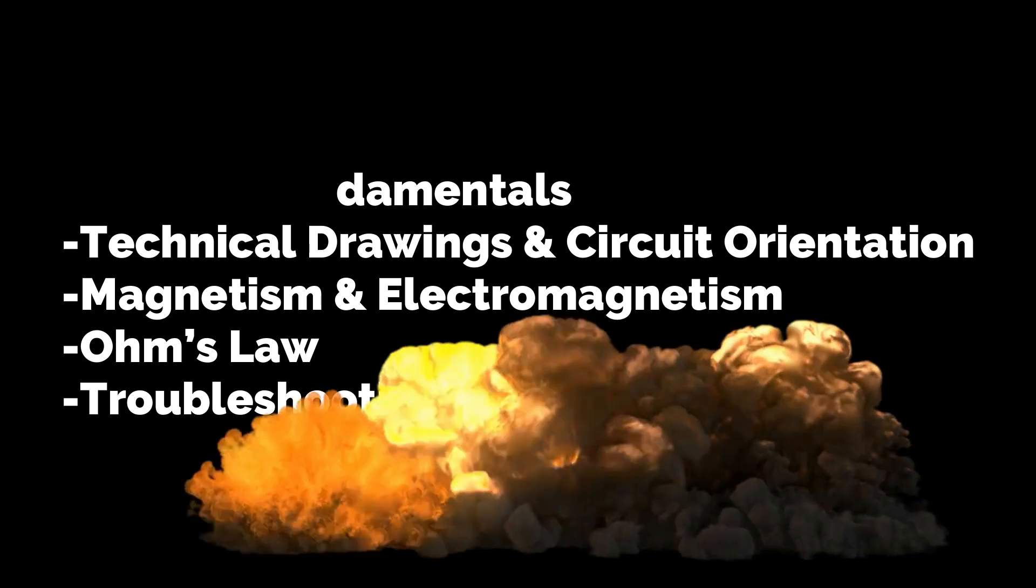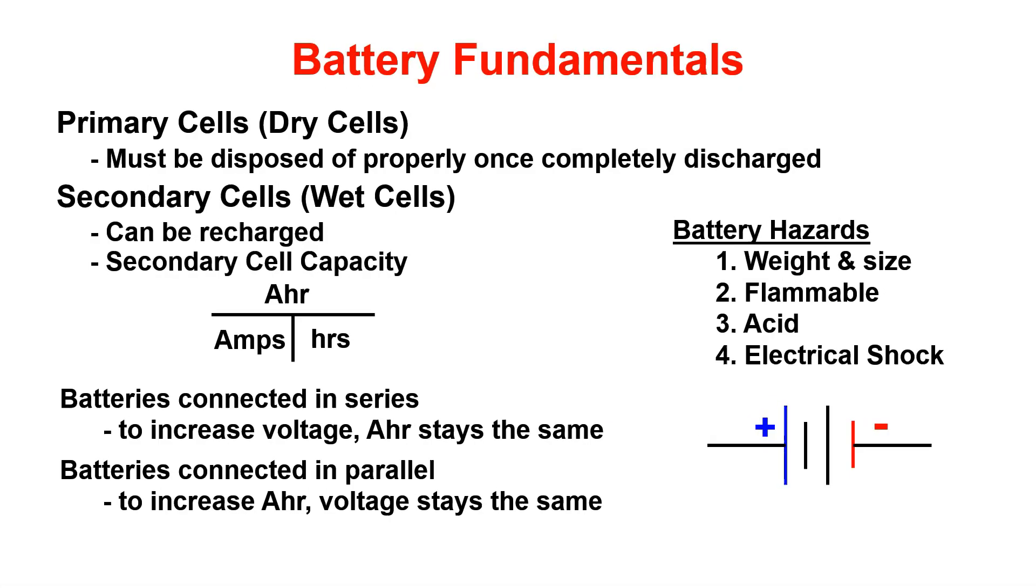The first review topic we're going to cover is battery fundamentals. In class we identified two different battery types, primary or dry cell batteries and secondary cell or wet cell batteries. Primary cells must be disposed of properly once completely discharged. Think of television remote batteries. Secondary cell batteries have the ability to be recharged when they are depleted. An example of this is the battery in your cell phone.